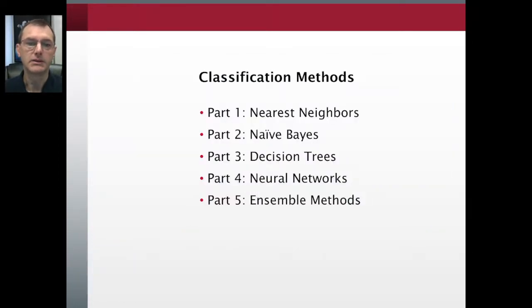Before we start, let's give an overview of the different classification methods we'll be looking at in this module. After nearest neighbors, we'll be looking at naive Bayes, then decision trees, followed by neural networks, and lastly ensemble methods, which use several different classifiers together into one big classifier.